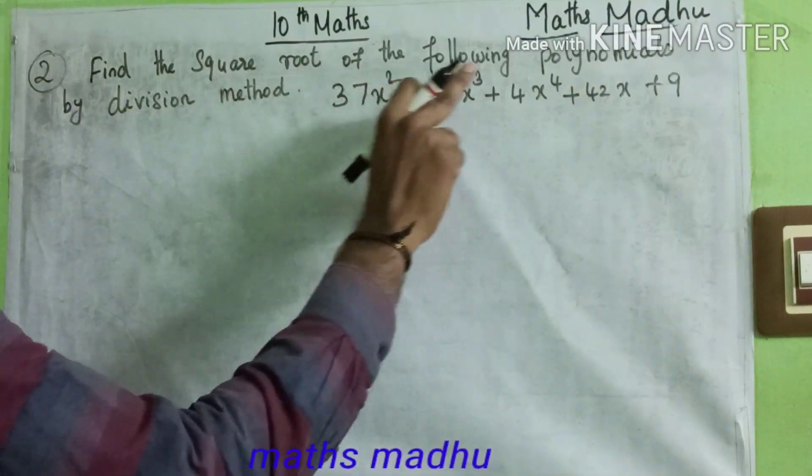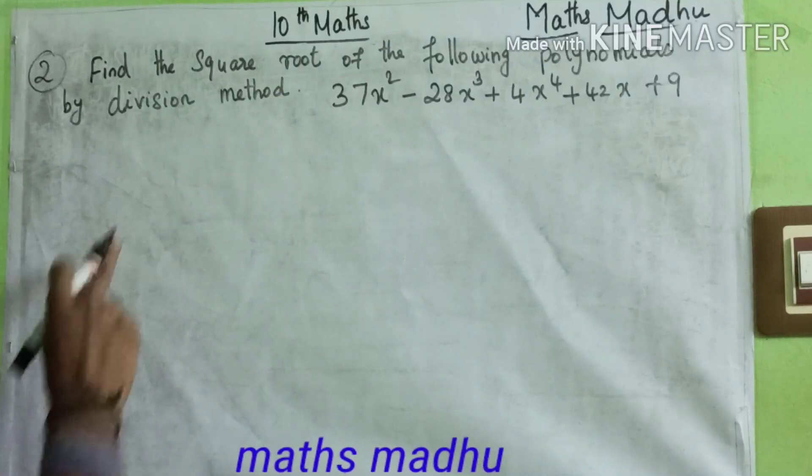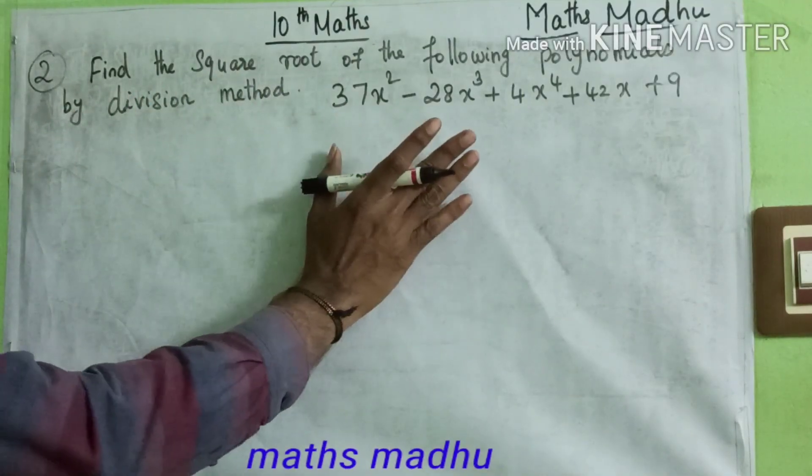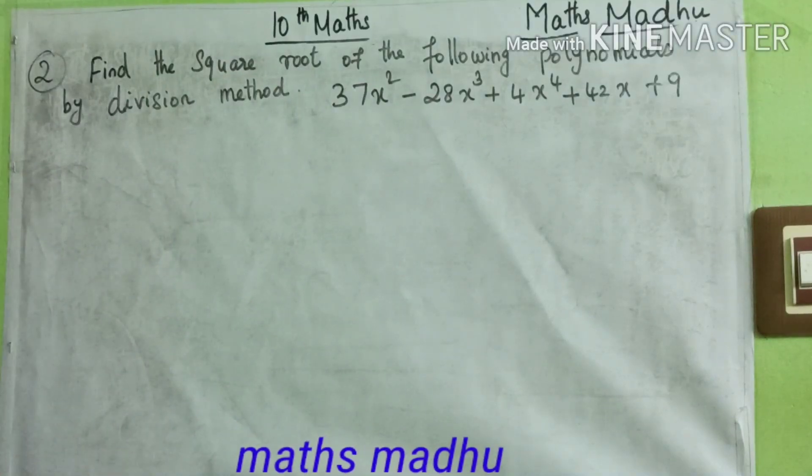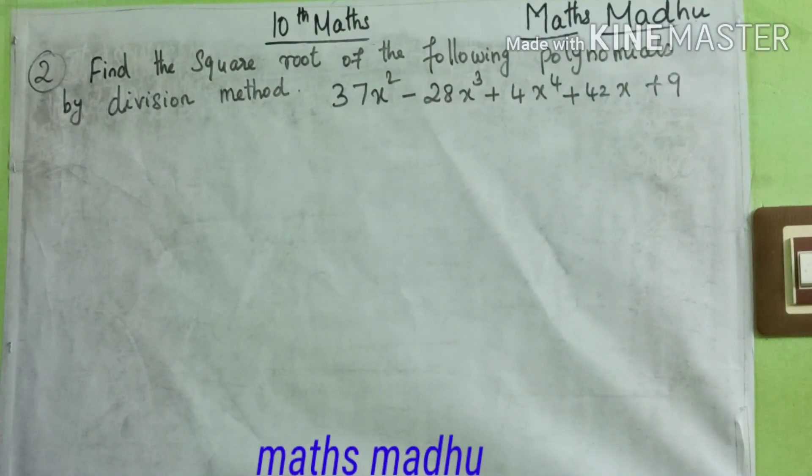Find the square root of the following polynomial by division method. This is very simple. Let's take a look at this problem from the public exam.